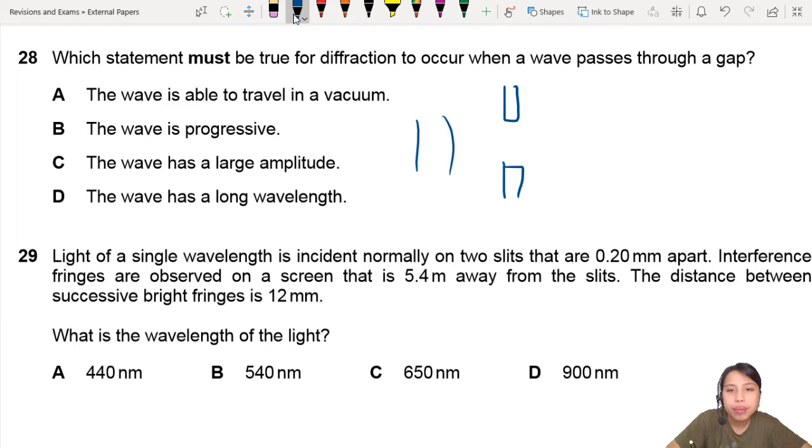Waves come in, I guess you call it straight. Once they go through the slit, they start to spread out. Depending, I mean, the shape may look like this, but that's what it means by diffraction.